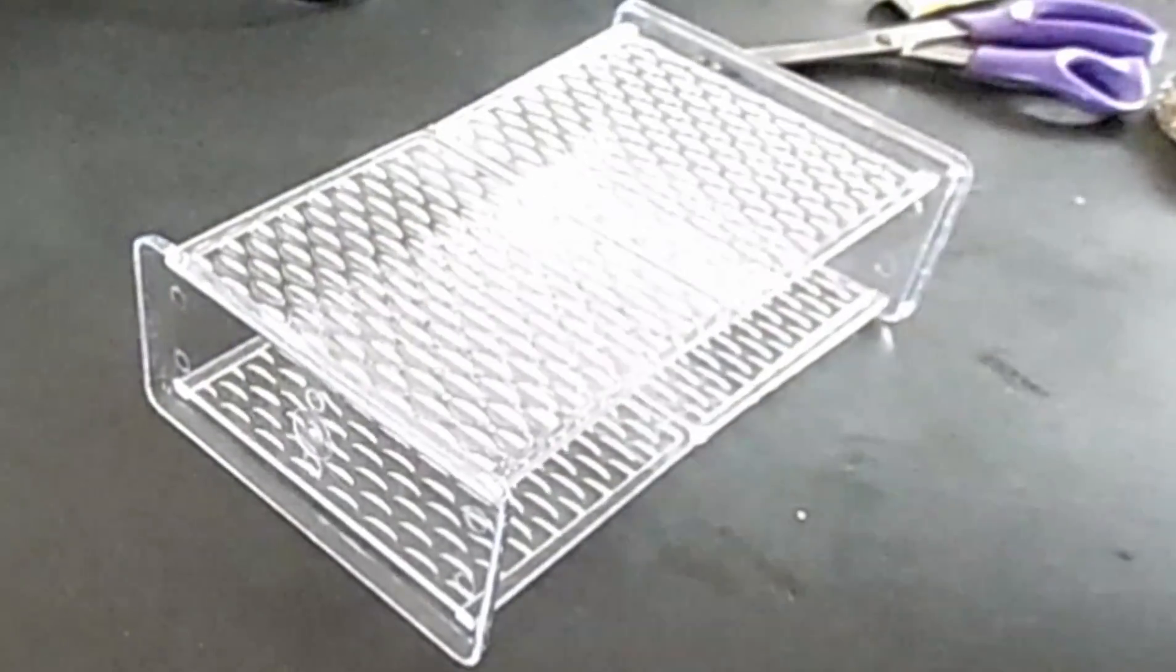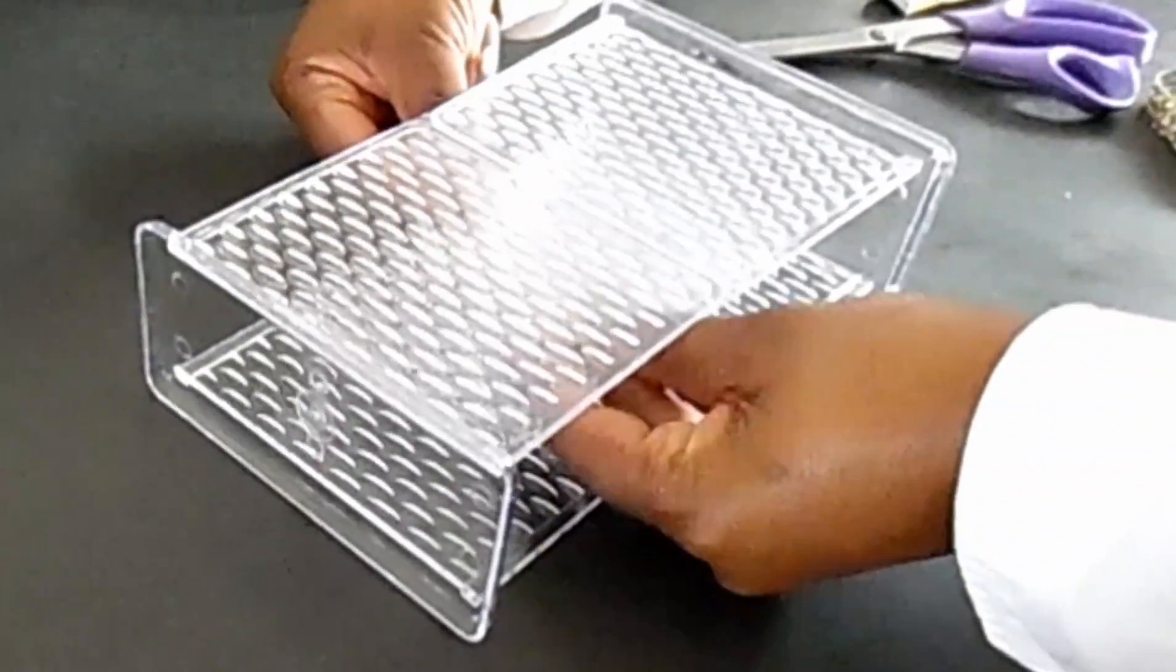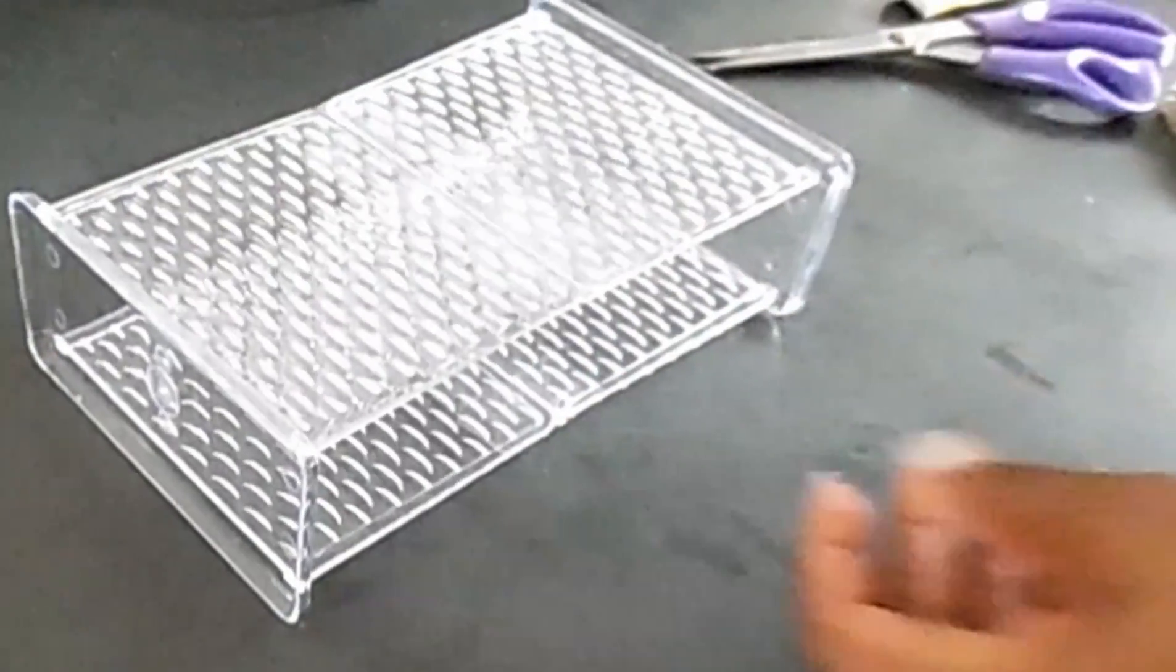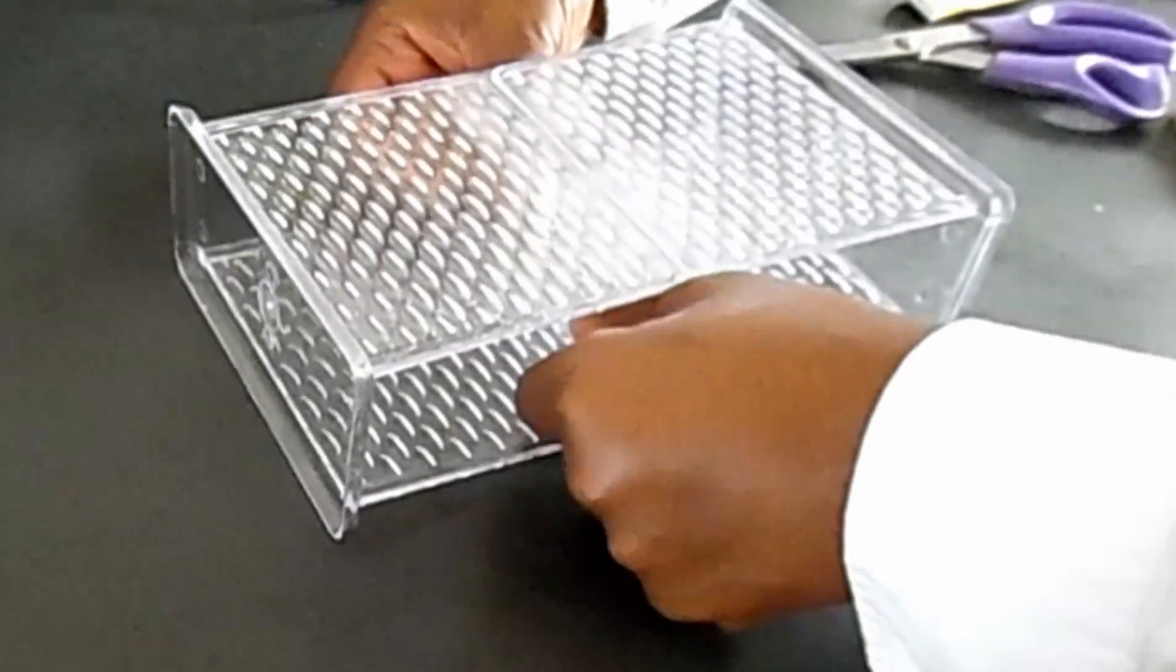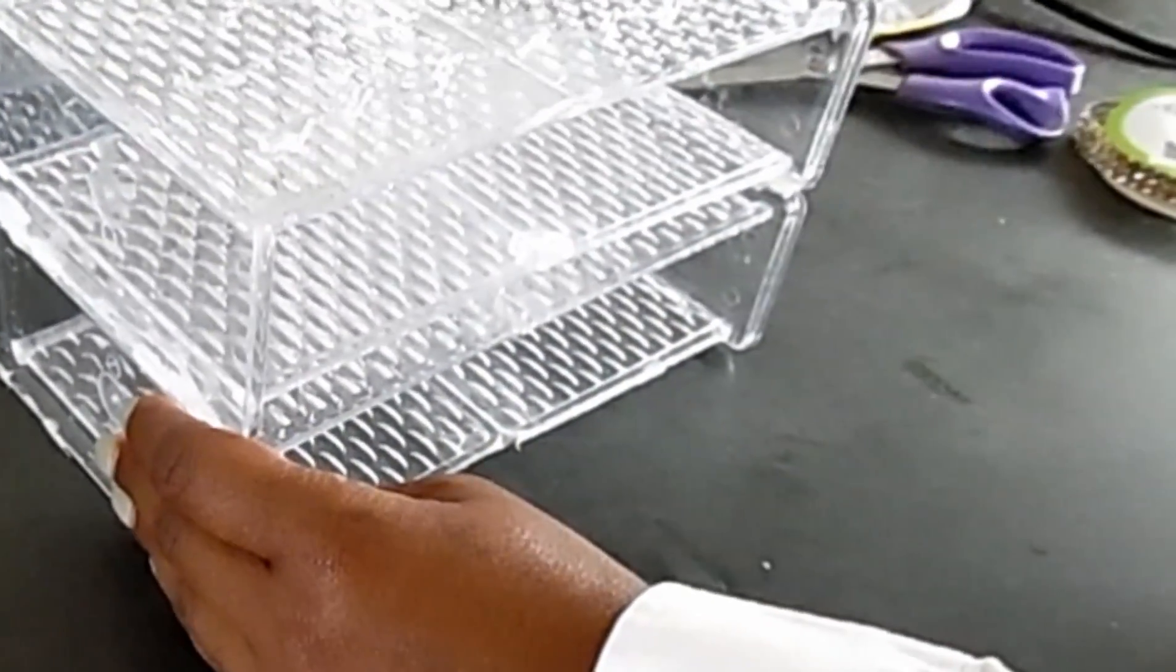And then you just take a little reinforcement strip and put it on the inside to make sure that the connection is very strong. And then you do that three more times if you have six of the napkin holders.